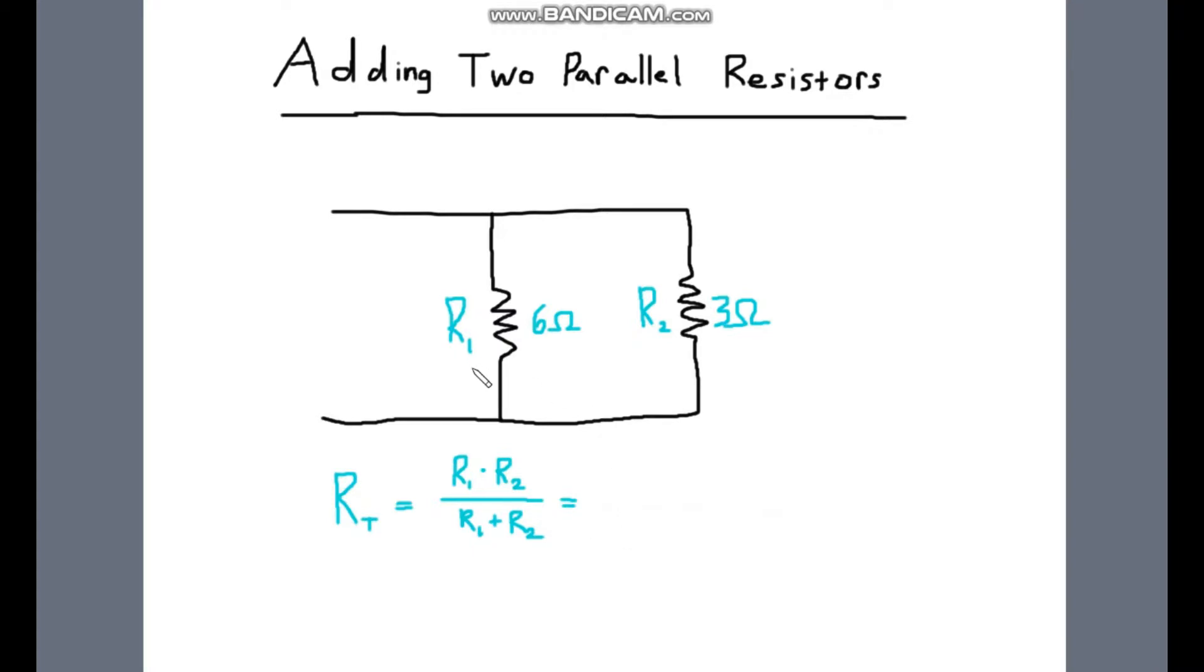So the way you do it is you take the product of the resistances and divide it by the sum of the resistances.